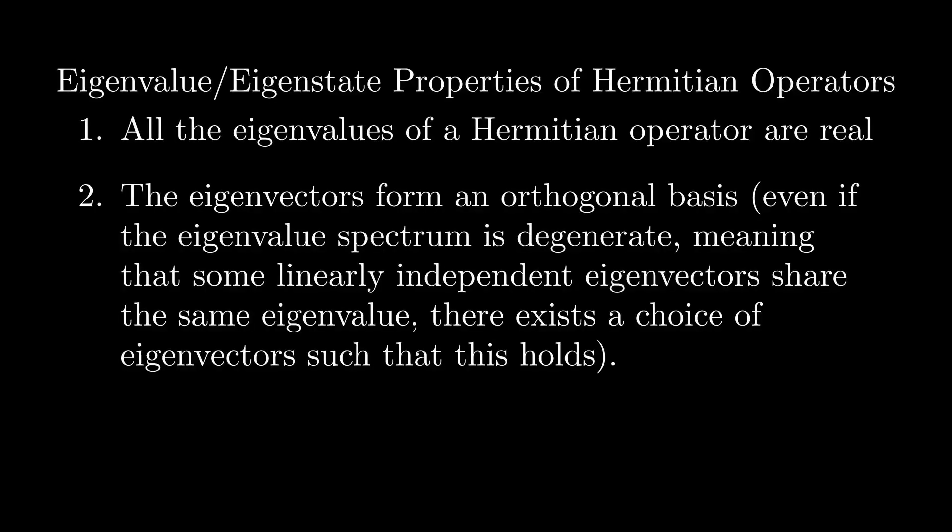It should also be noted that self-adjoint operators have nice properties when it comes to their eigenvalues and eigenstates. Firstly, we have that any self-adjoint operator has real eigenvalues, which makes sense, since I already explained that these self-adjoint operators correspond to quantities that we can measure, meaning that they must have real measurement outcomes. Additionally, we have that self-adjoint operators always have orthogonal eigenvectors.